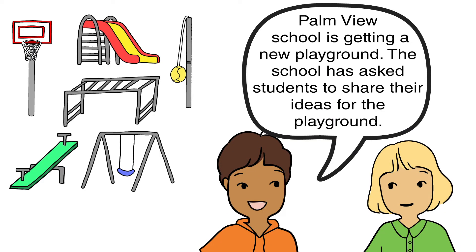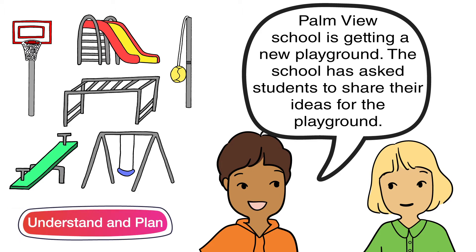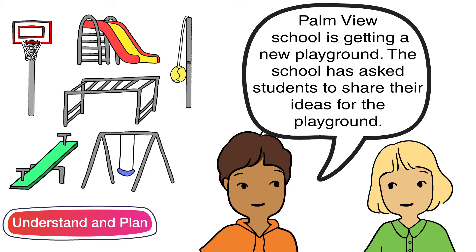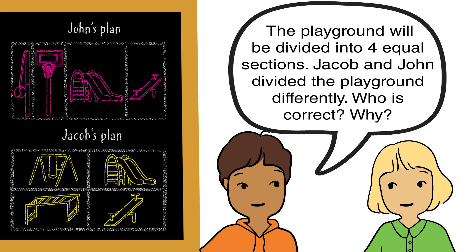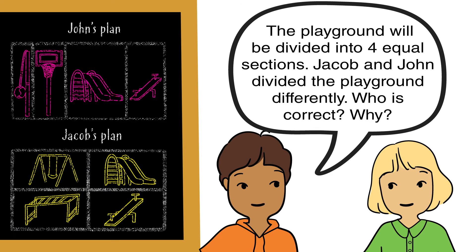Palm View School is getting a new playground. The school has asked students to share their ideas for the playground. The playground will be divided into four equal sections. Jacob and John divided the playground differently. Who is correct? Why?